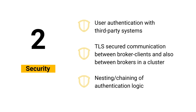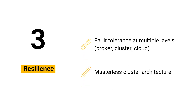3. Nesting of authentication logic. This creates flexibility for a variety of use cases with custom logic for authenticating and authorizing clients. 4. Resilience. Look for fault tolerance at multiple levels — broker, cluster, and cloud — as IT environments are prone to network outages and disruptions. Also look for masterless cluster architecture, as master-slave architecture suffers from long recovery times, which hurts application availability and performance.